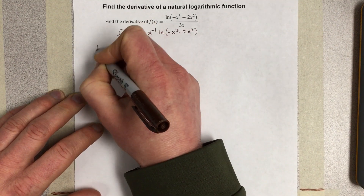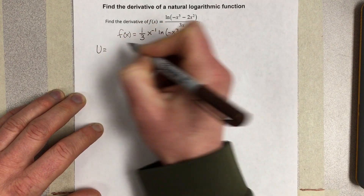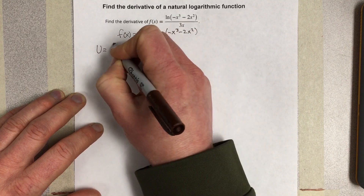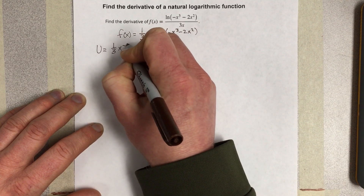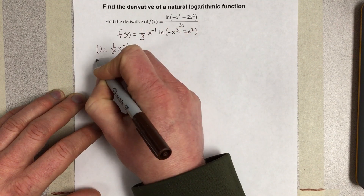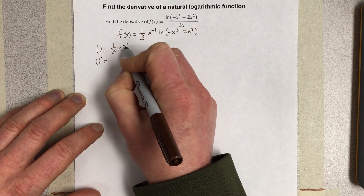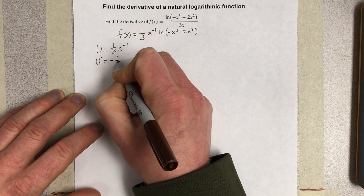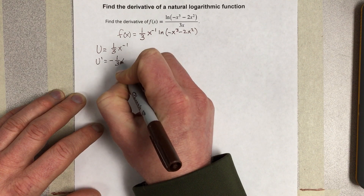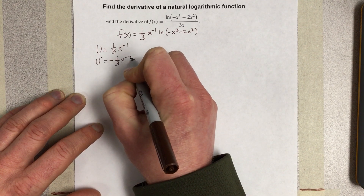So my u for the product rule would be (1/3)x to the negative 1. Then u prime would be — bring the negative 1 to the front — that's negative 1/3 times x to the negative 2.